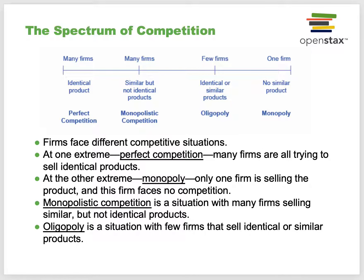Here's the spectrum of competition. We'll start with perfect competition, which is many firms and an identical product. Then we'll talk about a monopoly on the other end—one firm and no similar product. They have a monopoly on the market; they're the only ones that sell it. In between, there are two gradations: monopolistic competition, with many firms and similar but not identical products; and oligopoly, with a few firms and identical or similar products.